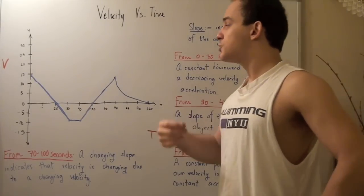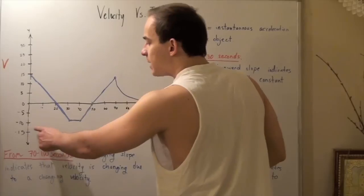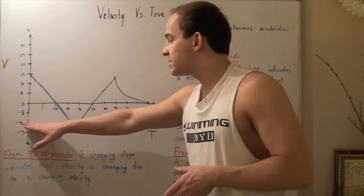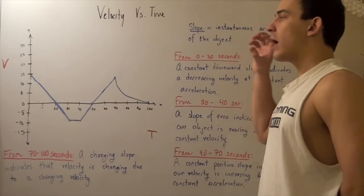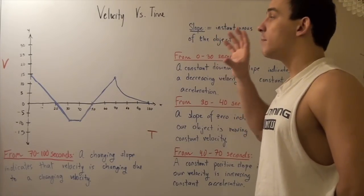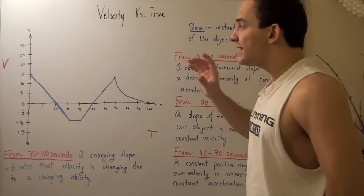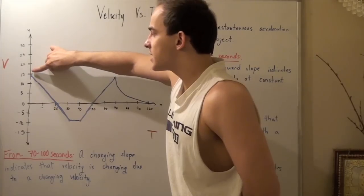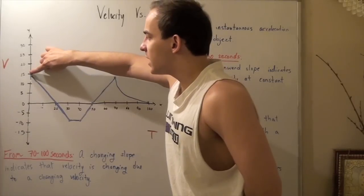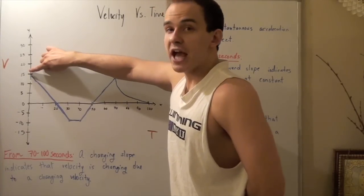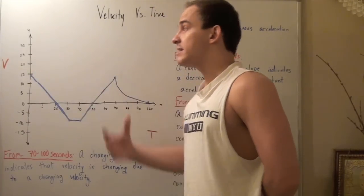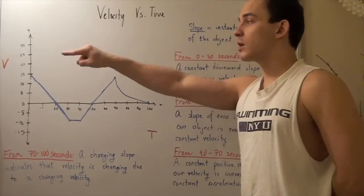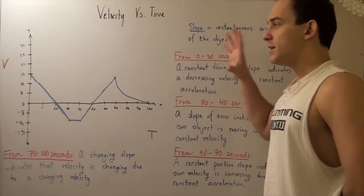Let's look at our object's motion from time equals zero to time equals 30. At time equals zero, our object is already moving at some velocity, indicated by the fact that the y-intercept at time equals zero is 15 meters per second. So when time is zero, our object's velocity is positive 15 meters per second, and initially it is already moving in the positive direction.